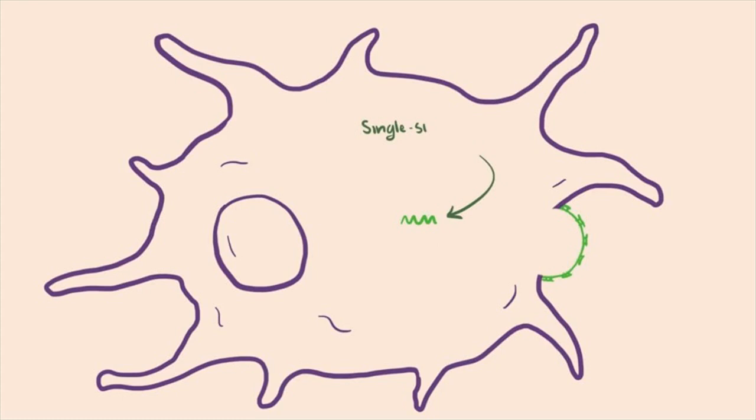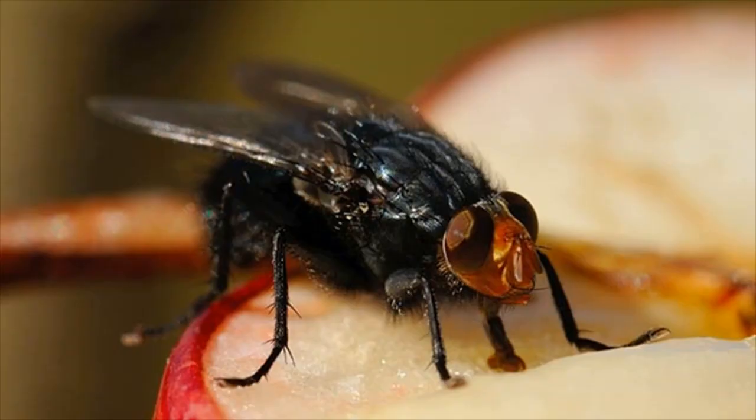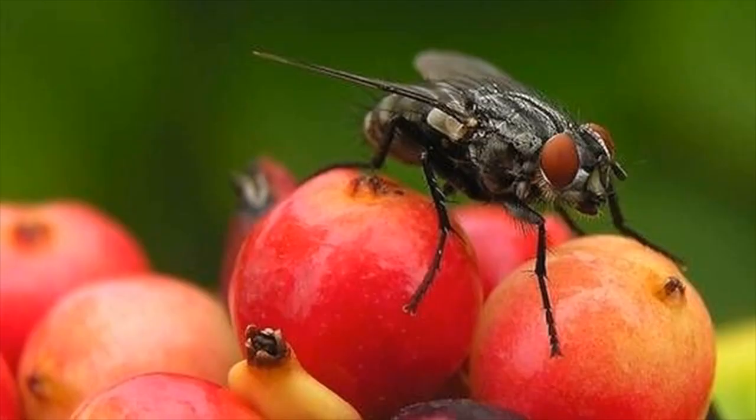Leprosy: this disease rarely happens but cannot be ignored. In this disease, the virus attacks the nervous system and skin cells. This disease virus normally stays for 2 to 5 years in the infected person's body.